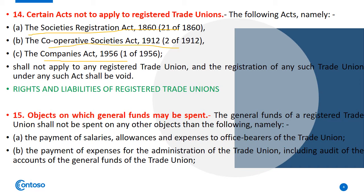In Section 15, the objects on which general funds may be spent are the main thing. The general fund of a registered trade union shall not be spent on any object other than the following. Whatever the fund is, it will not apply for any other reason. What applies to the general fund? The payment of salaries.